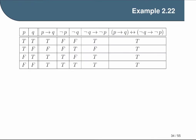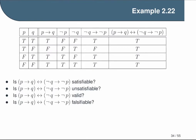For a slightly more complicated formula, consider the statement p implies q if and only if not q implies not p. Informally, this says that if an implication holds, so does its contrapositive. Is this statement satisfiable, unsatisfiable, valid, or falsifiable? A glance at the truth table shows a T in every row, which tells us right away that this is a valid statement — there is no interpretation that makes it false. So we also know it is not falsifiable. Since satisfiability is a weaker condition, this is certainly also satisfiable, and therefore it cannot be unsatisfiable.